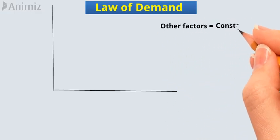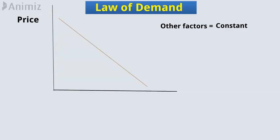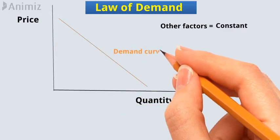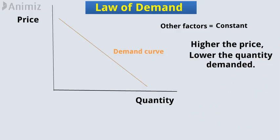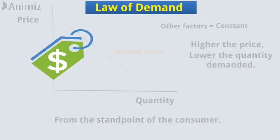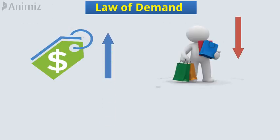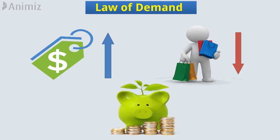Law of Demand. The law of demand states that if all other factors remain equal, the higher the price of a good, the fewer people will demand that good. In other words, the higher the price, the lower the quantity demanded. The chart portrays the most basic relationship between the price of a good and its demand from the standpoint of the consumer. The higher the price of a good, the lower the number of interested buyers, since buyers want to save as much money as possible.